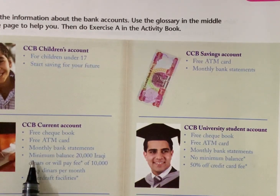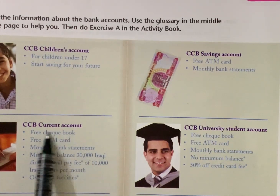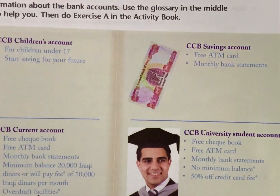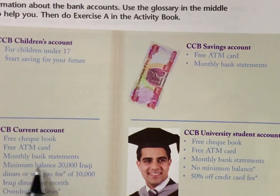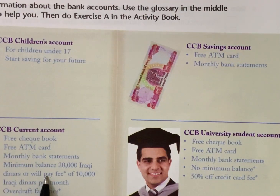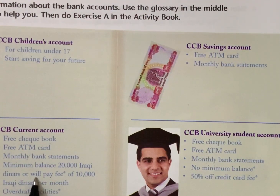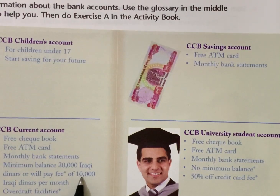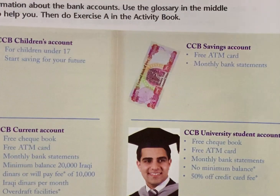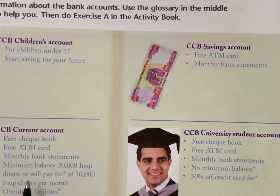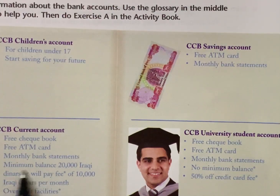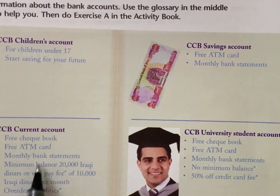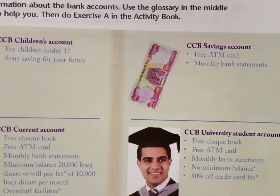وبعد أكو ملاحظة مهمة بالـ Current Account — الحساب الجاري. لاحظوا: راح ينطيك minimum balance — يعني حد أدنى من الرصيد. مثلاً 20 ألف دينار عراقي، أو تدفع رسوم 10,000 دينار per month — تدفع رسوم كل شهر. يعني هذا الحساب الجاري: تبقي حد أدنى من الرصيد، ما تسحب كل النقود.